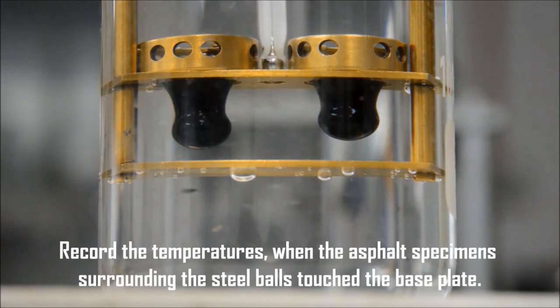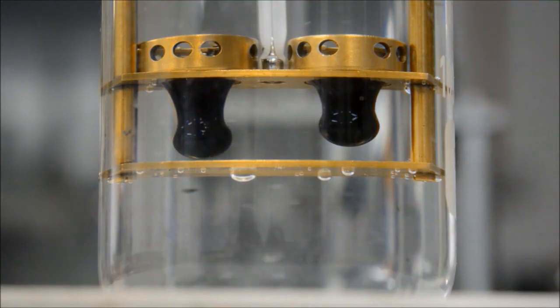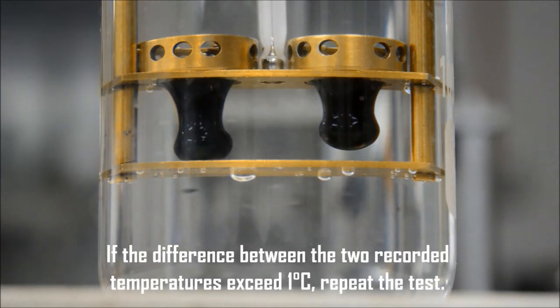Record the temperatures when the asphalt specimens surrounding the steel balls touch the base plate. If the difference between the two recorded temperatures exceed 1 degree Celsius, repeat the test.